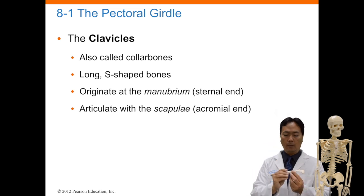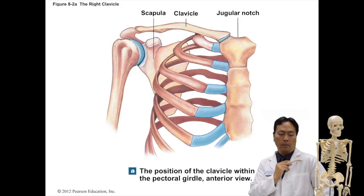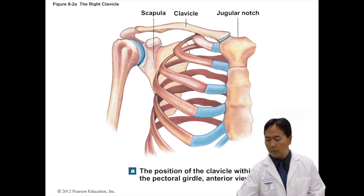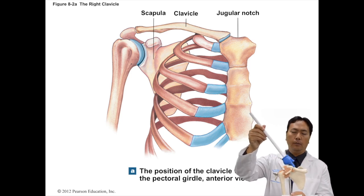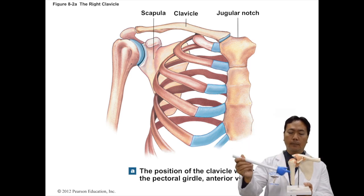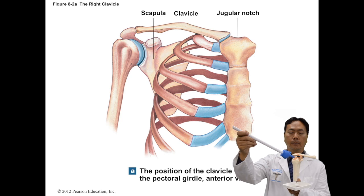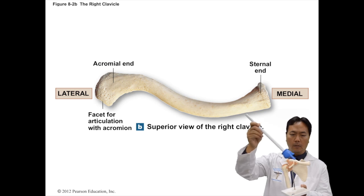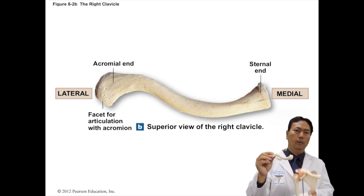The clavicle is also known as the collarbone, and it is a long S-shaped bone. It begins at the sternal end of the manubrium and articulates with the scapula — this is basically where your shoulder moves. The scapula is located right behind your thoracic cage or rib cage, and the clavicle connects the sternum at the manubrium into the scapula. The humerus connects into the glenoid fossa, which allows your arm to have the biggest range of motion of all joints. The acromial end of the clavicle hooks into your shoulder or scapula.